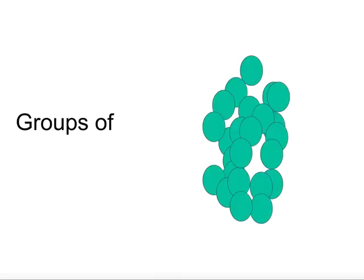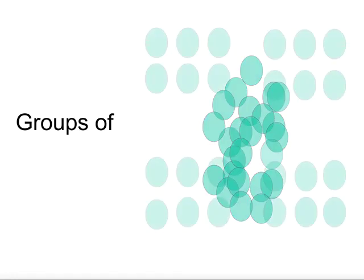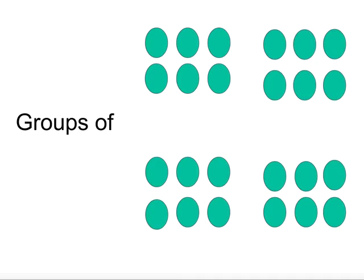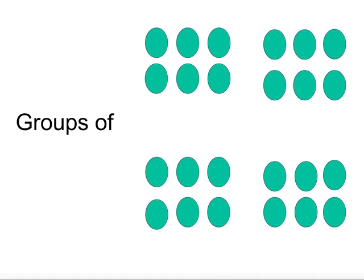If we get stuck on a question, it can help to organise our thinking into groups to help us solve the problem. Here are 24 counters. When I group them into four equal groups, I can see there is a total of 24, so 4 multiplied by 6 is 24. I can also see when 24 is shared into four groups, there are 6 in each group, so 24 divided by 4 equals 6. I can also see if I share 24 into groups of 6, it makes four groups, so 24 divided by 6 equals 4.